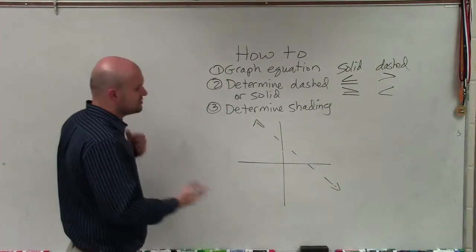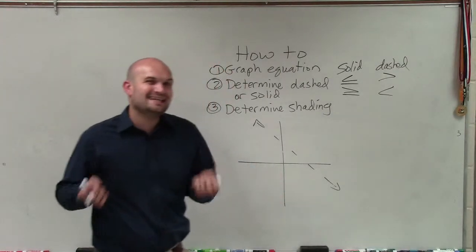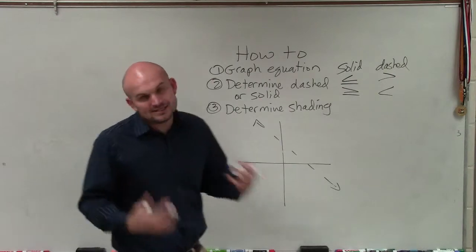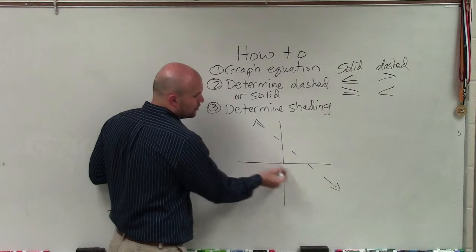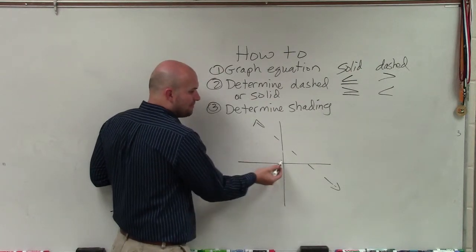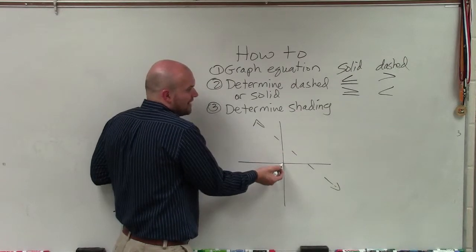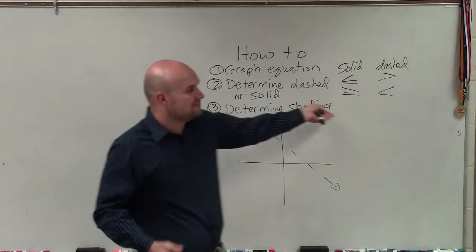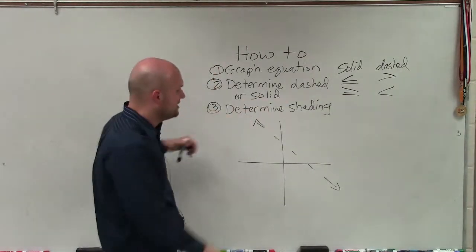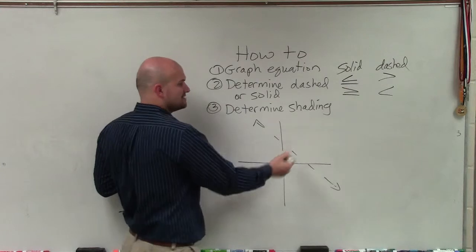To do that, we want to use a test point. The best way is to pick an easy, simple test point. I think the easiest one to always use is (0, 0). However, we don't want to use (0, 0) if our line goes through that point, because then we're testing our line. If we already know if our line is solid or dashed, there's no point in testing it. In this case, you can see the line does not go through (0, 0), so I can go ahead and test it.